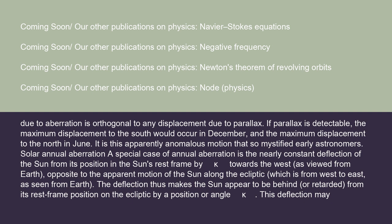Solar annual aberration, a special case of annual aberration, is the nearly constant deflection of the Sun from its position in the Sun's rest frame by kappa towards the west, as viewed from Earth — opposite to the apparent motion of the Sun along the ecliptic, which is from west to east. The deflection thus makes the Sun appear to be behind, or retarded, from its rest frame position on the ecliptic by an angle kappa.